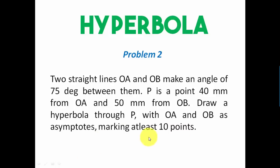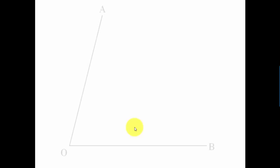We have a problem in front of us. Initially we're going to draw two straight lines at an angle of 75 degrees between them. Along that plane somewhere, we're going to have a point 40 mm from one line and 50 mm from the other. Let's draw two lines at an angle of 75 degrees. This is OA and this is OB.